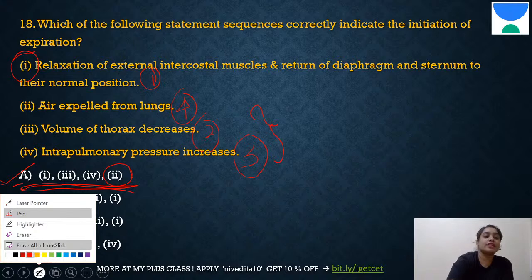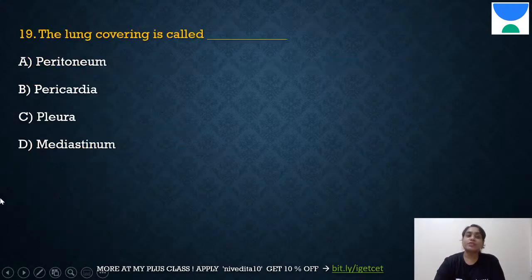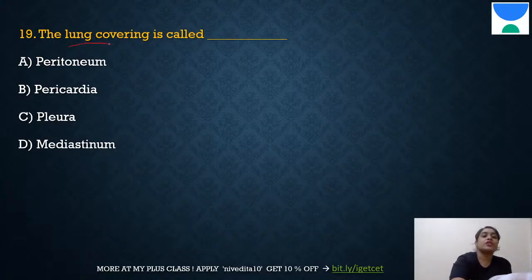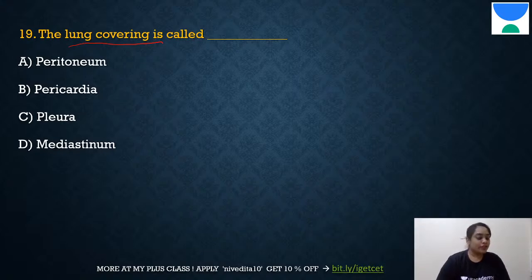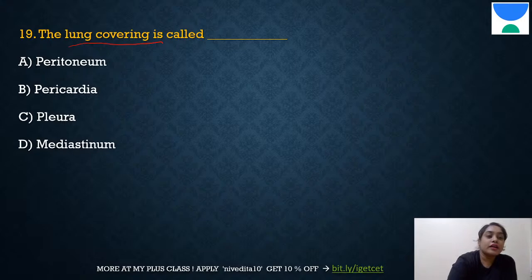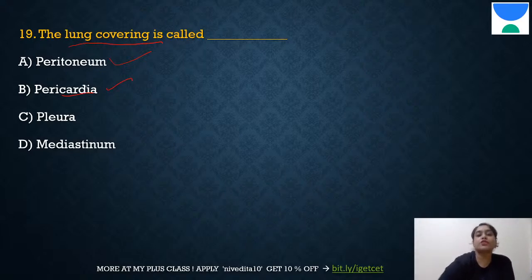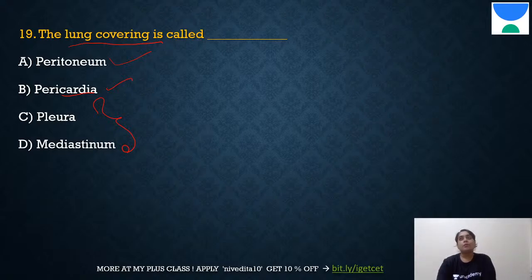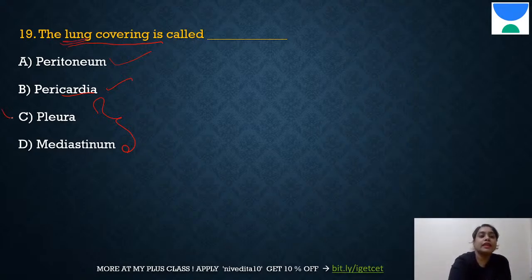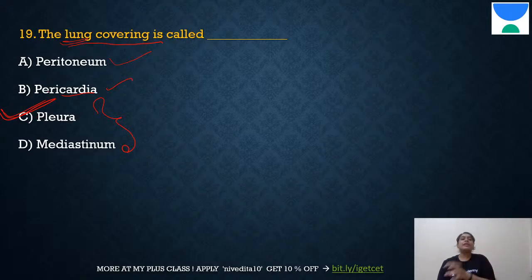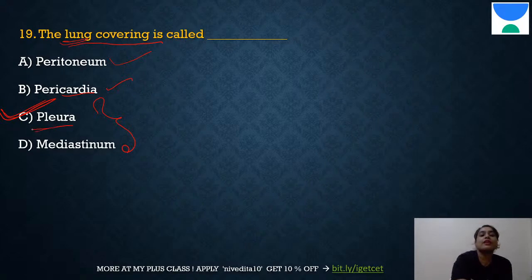Question 19: Lung covering is called — the answer is C: pleura. Peritoneum is the covering for the body cavity, pericardium is related to the heart, and mediastinum is a general organ covering. Since the question specifically asks about the lungs, the answer is pleura.